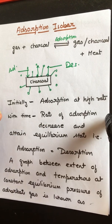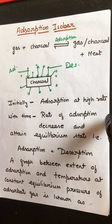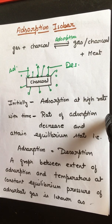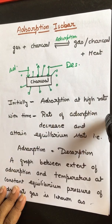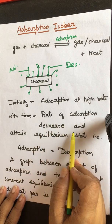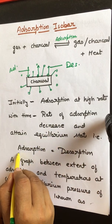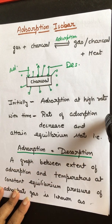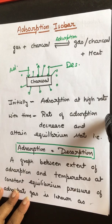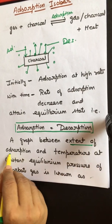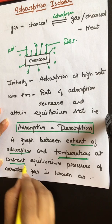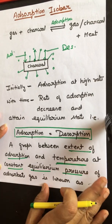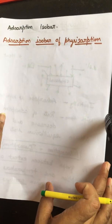If we plot a graph keeping this equilibrium pressure constant, between the extent of adsorption and temperature, that graph is known as the adsorption isobar. This is called adsorption isobar.